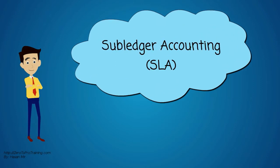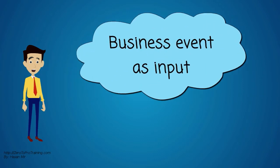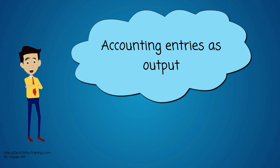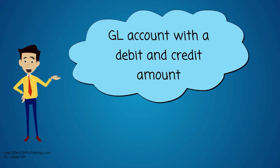Then Oracle improved the model. It created a central module called Subledger Accounting, also known as SLA. It serves as a common accounting engine for all subledgers. It takes business events as input, which are sent to the Subledger Accounting module from other modules of Oracle E Business Suite, and produces accounting entries as output. Accounting entries are made up of journal lines grouped into journal headers. Each journal line has a GL account with a debit and a credit amount.